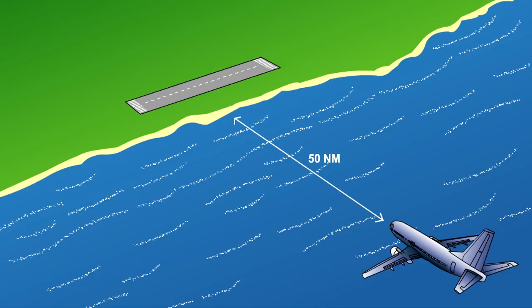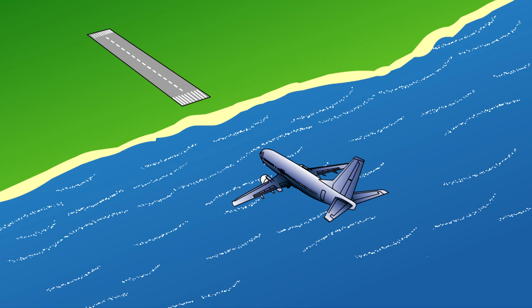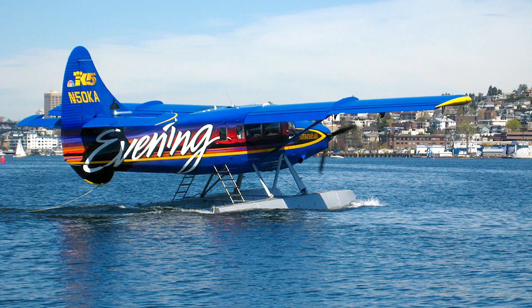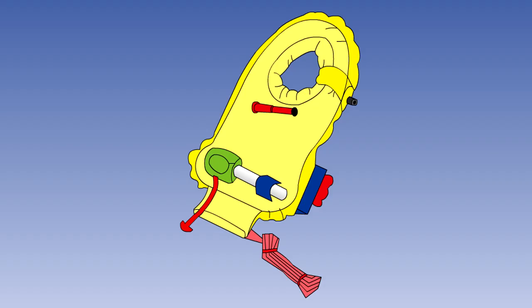We will now examine the regulations concerning life jackets. Land aeroplanes, when flying over water at a distance of more than 50 nautical miles from the shore, or when taking off from or landing at an aerodrome where the take-off or approach path is so disposed over water that in the event of a mishap there will be a likelihood of a ditching, or seaplanes and amphibians operating on water, must have on board a life jacket equipped with a survivor locator light for each person on board. Each life jacket must be stowed in a position easily accessible from the seat or berth of the person for whose use it is provided.